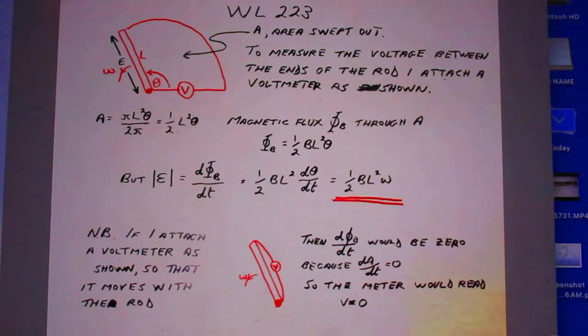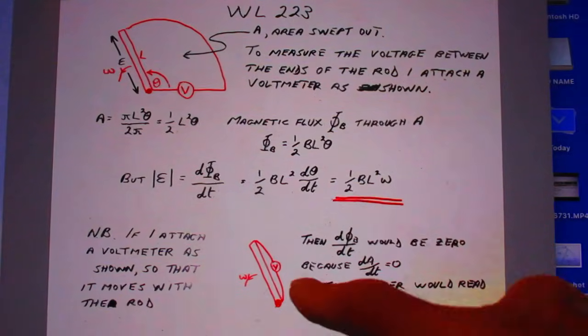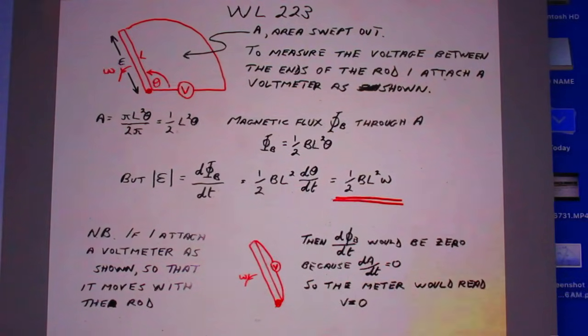What is interesting, that Eugen also says, if I attach a voltmeter, as shown here, so that it moves with the rod, then dΦ/dt would be zero because dA/dt, this surface area dA/dt is zero. So the meter would read V equals zero.